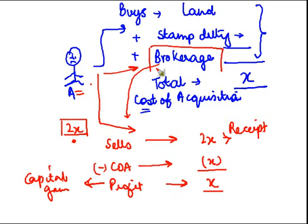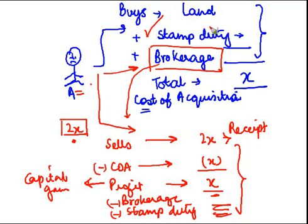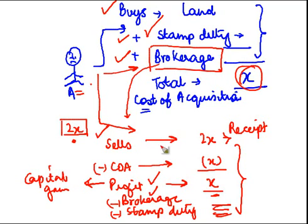Additionally, since the broker is getting you a customer on the sale side, he may again charge brokerage, which also has to be reduced from the sale proceeds. The buyer might also ask you to pay stamp duty on the transfer — that too has to be reduced. All these are fact-based deductions. So you buy an asset, incur acquisition costs, sell the asset, reduce all costs from sale proceeds, and the resulting profit is the capital gain.